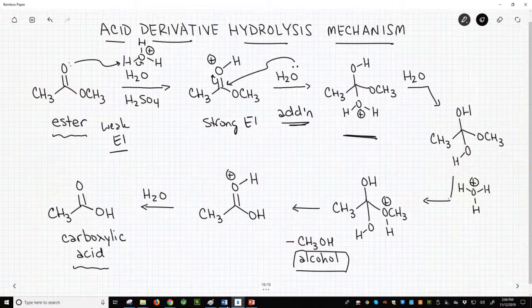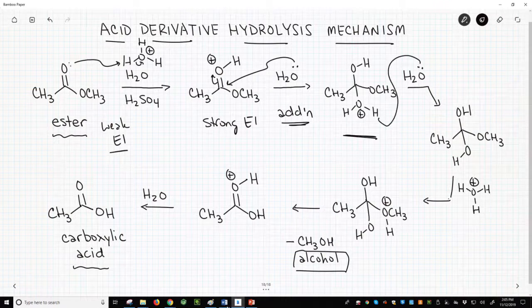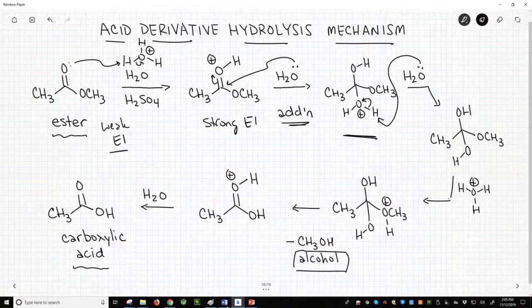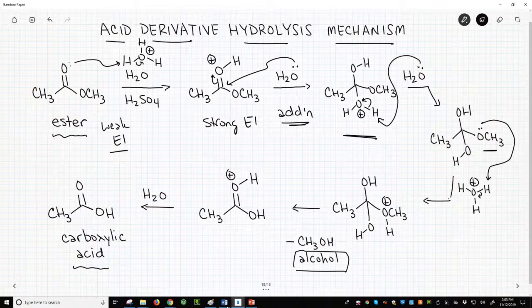So fine, we have to do this the hard way. The next step will be to deprotonate the bottom oxygen. That gives us a neutral molecule. Once it's neutral, we can protonate the OCH3, which is what we want it to do, to make it a better leaving group.